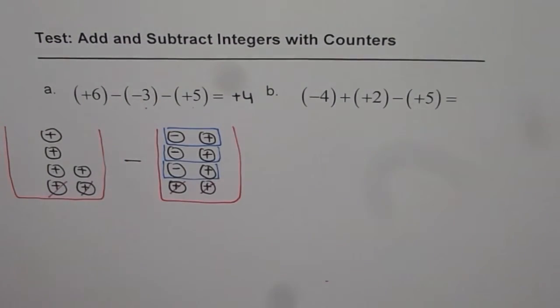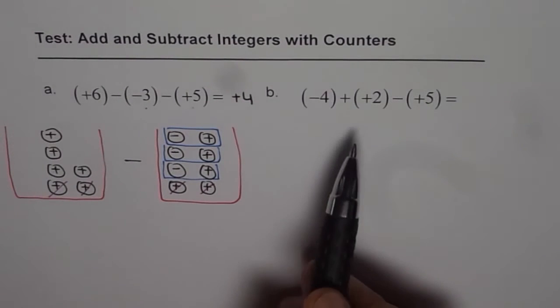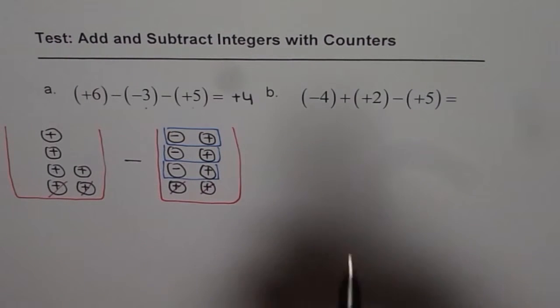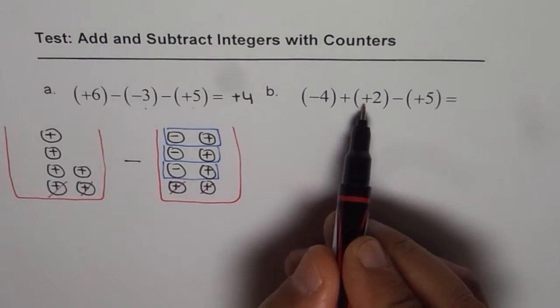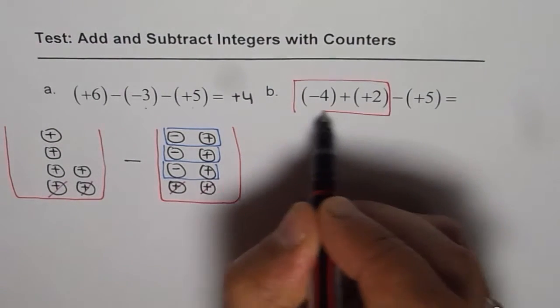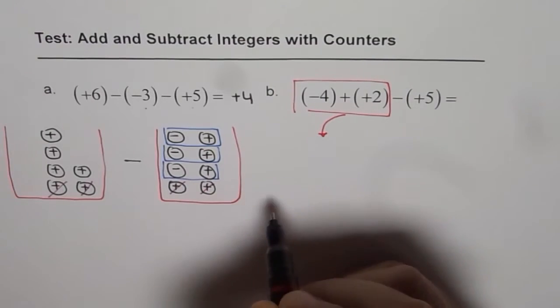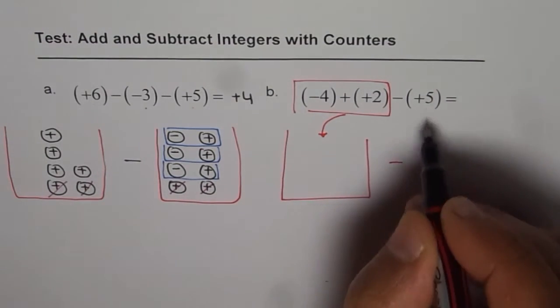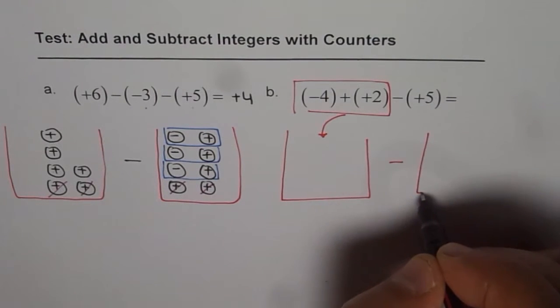Using counters we can solve like this. Now let us apply the same method to the next question. Here we have (-4). Here we have (-4) + (+2). So these 2 quantities will get into our first container. Is that okay?